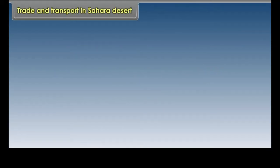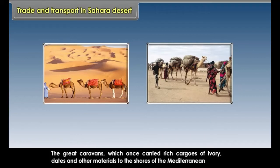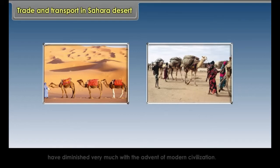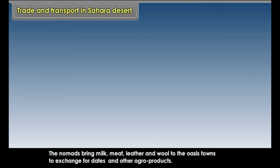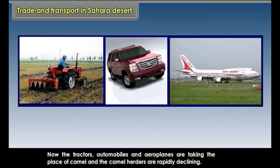Trade and Transport in Sahara Desert. The camel is the ship of the desert. The nomads travel in caravans. The great caravans which once carried rich cargoes of ivory, dates, and other materials to the shores of the Mediterranean have diminished greatly with the advent of modern civilization. The nomads bring milk, meat, leather, and wool to the oasis towns to exchange for dates and other agro-products. Now, tractors, automobiles, and aeroplanes are taking the place of the camel, and camel herders are rapidly declining.